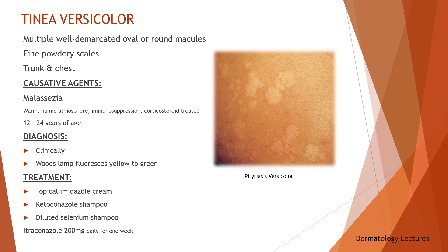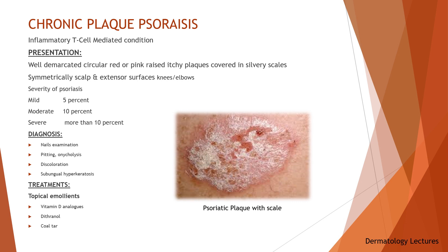Chronic plaque psoriasis. Psoriasis is a common relapsing inflammatory T-cell mediated skin condition that can present in a number of different ways. 90% will have psoriatic plaques with well-demarcated circular red or pink raised itchy plaques covered in silvery scales. They tend to occur symmetrically over the scalp and extensor surfaces of the body and are particularly common on the knees and elbows. The severity of psoriasis is judged by the area of the body affected: 5% is rated as mild, 5 to 10% as moderate, and over 10% as severe.